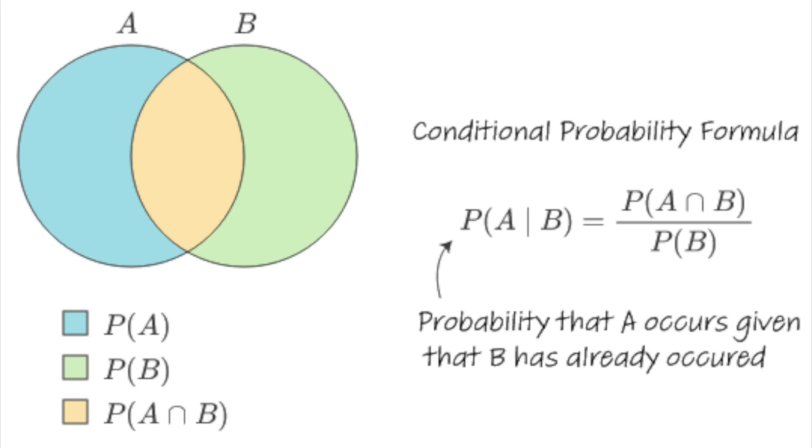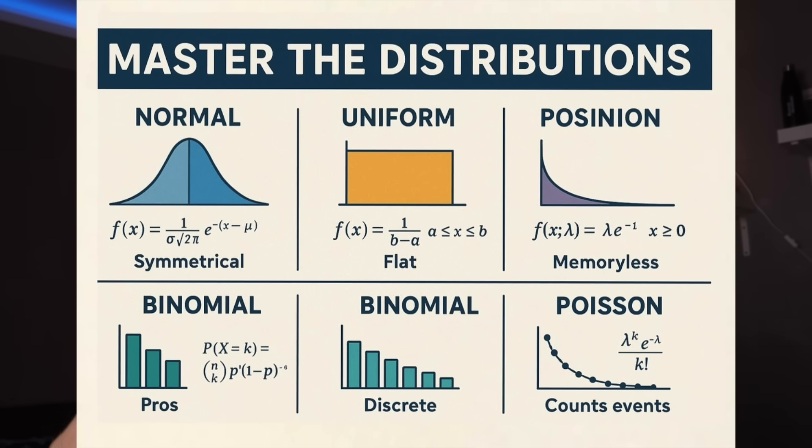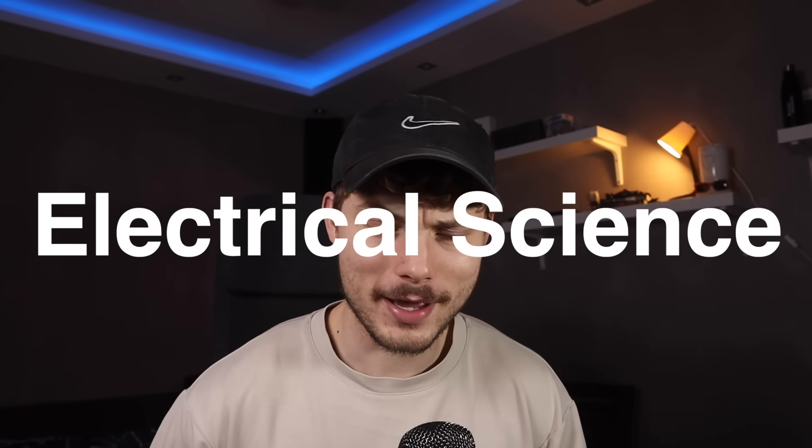Differential equations were kind of the big core. On the probability and stats side, we had conditional and unconditional probability, Venn diagrams, and all the distributions — normal, Poisson, and binomial distribution. That's the core of it. There was much more, like Gaussian elimination for matrices, but you get the gist.